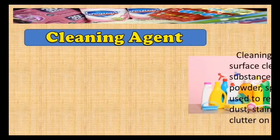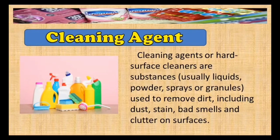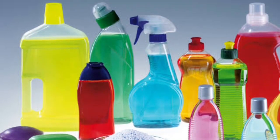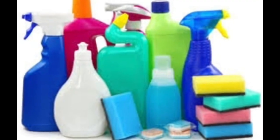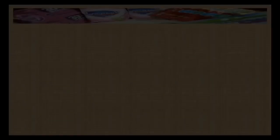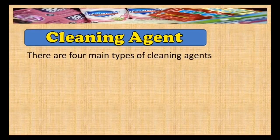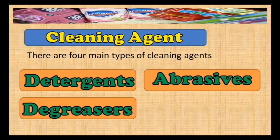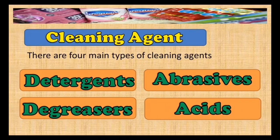Cleaning agents, or hard surface cleaners, are substances — usually liquid, powder, sprays, or granules — used to remove dirt, including dust, stains, bad smells, and clutter on surfaces. Different cleaning agents are used depending on the item to be cleaned, the cleaning method, and the type of soiling found in the item. There are four main types of cleaning agents: number one, detergent; number two, degreasers; number three, abrasives; and number four, acid.